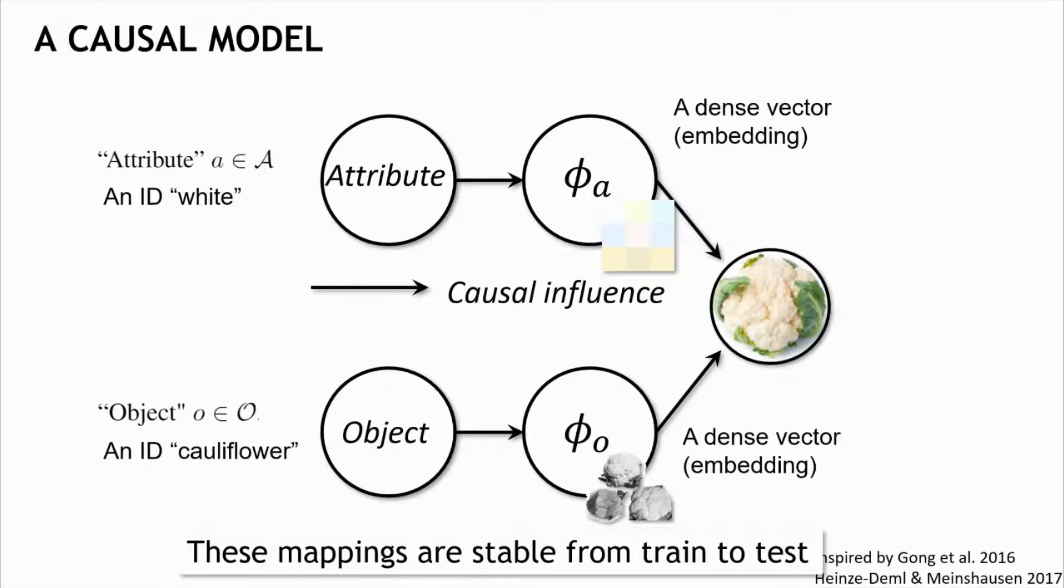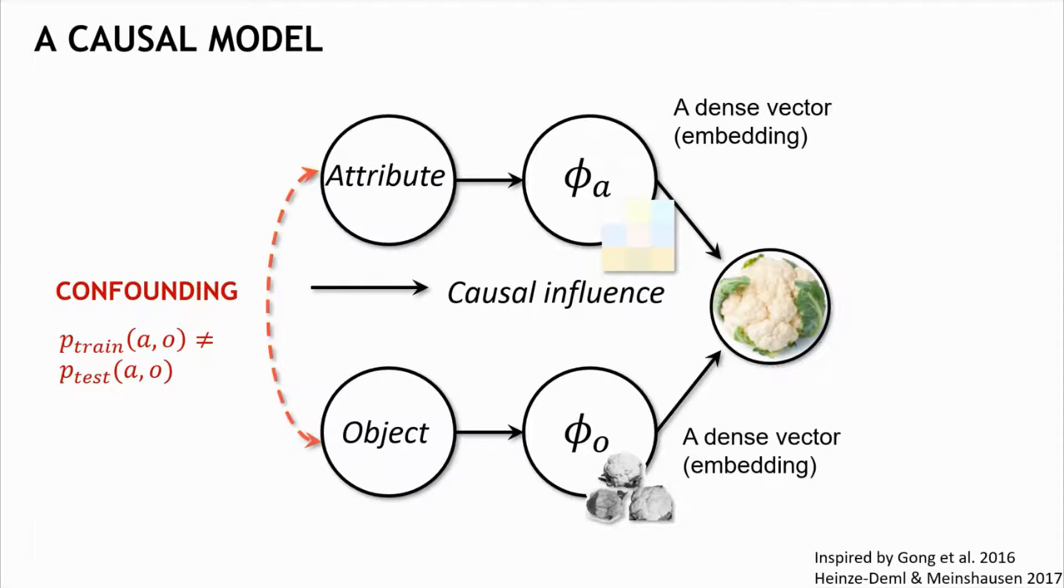But the causal graph has another factor, which is this dashed edge. It expresses the confounding causal mechanism that generates the correlation between the attributes and the objects that exist in the training data, but changes at test time. For example, where all cauliflowers are white and tomatoes are red. In that case, if attributes are correlated, how can we create an image of a new composition, like an image of a purple cauliflower?